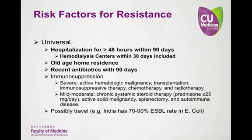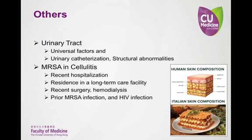Immunosuppression and recent travel history are also red flags that warrant serious consideration for selection of more broad-spectrum agents. Additional risk factors for other infection types like UTI and cellulitis are also presented to help make more accurate predictions of which patients need broader therapy.